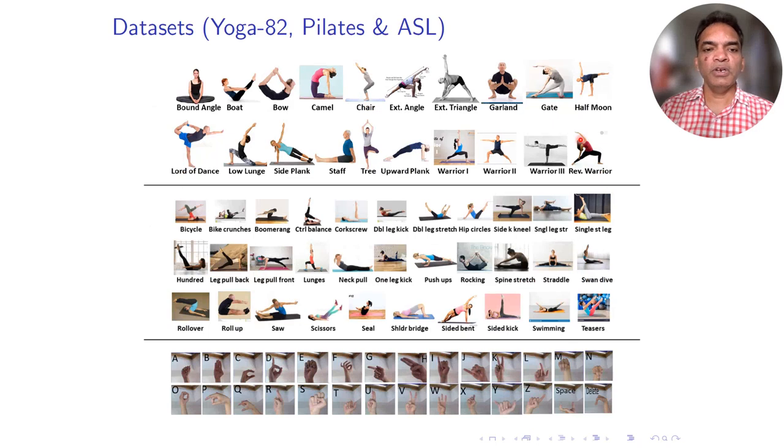In this work, we have three datasets. The top one is a subset of Yoga 82 dataset—we picked 20 poses that are suitable. We have a Pilates dataset which has around 32 classes, and finally, we have American Sign Language, which is not the total body pose, just the hand pose. It has nothing to do with fitness, and we would like to see how our method can generalize.